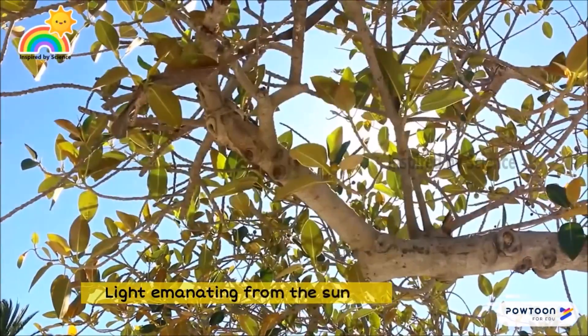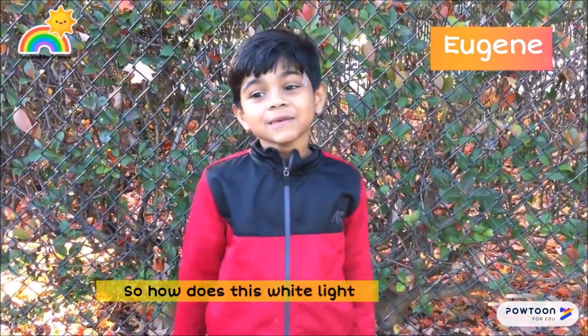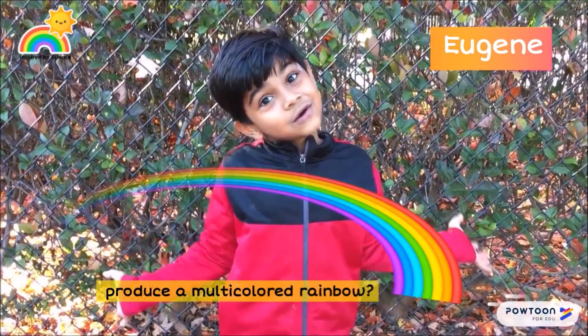Light emanating from the sun is white light. So how does this white light produce a multicolor rainbow? Know it now!